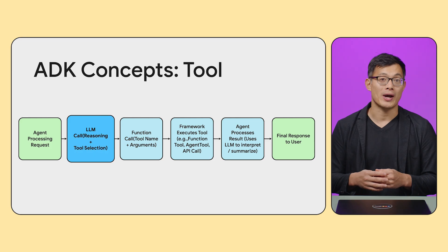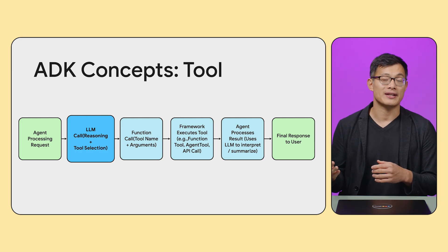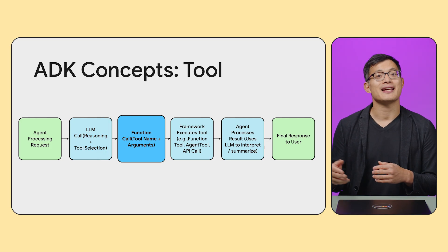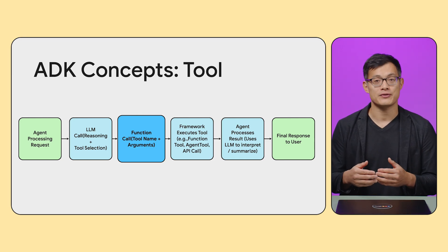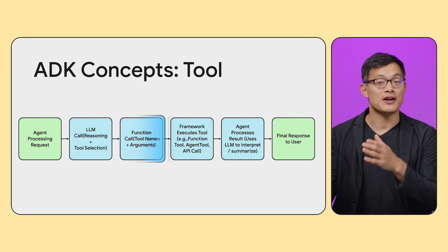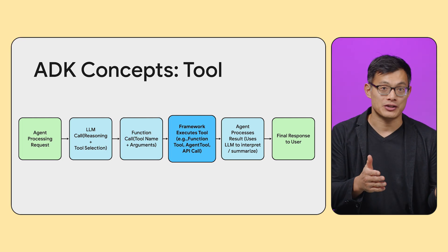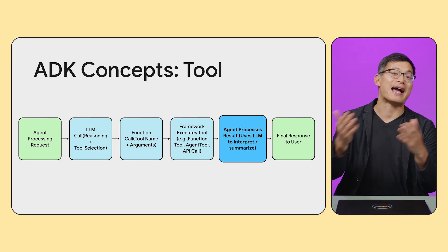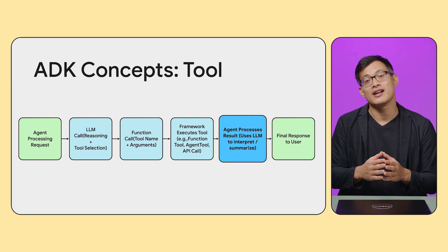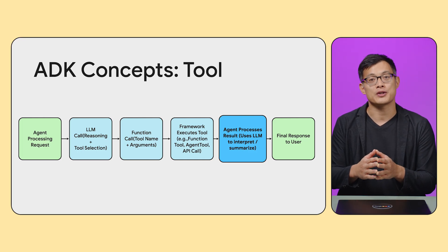ADK provides a structured mechanism for your agent to use these tools. Your agent receives a user request. The LLM analyzes it, determines if an external action is needed, and decides which registered tool to use, along with the arguments for that tool. The ADK framework then intercepts this function call from the LLM, executes the corresponding code or action you've defined for that tool, and finally, the tool's result is sent back to the agent — usually to the LLM again — so it can process the result and formulate the final response to the user. ADK abstracts this away, providing a clean interface for defining tools and handling that entire execution loop for you.